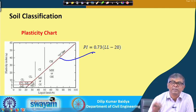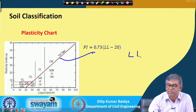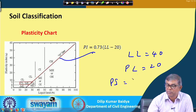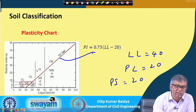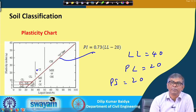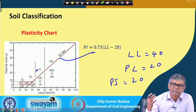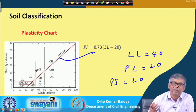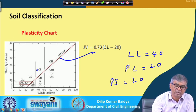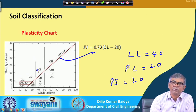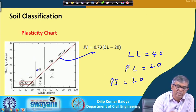If a test on a particular soil gives a liquid limit of 40 and a plastic limit of 20, then the plasticity index PI equals 20. Plotting PI of 20 on the y-axis and liquid limit of 40 on the x-axis, the point is located on the plasticity chart. From the position of this point relative to the boundary lines, we understand the classification of that particular soil sample.